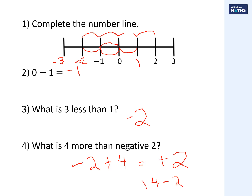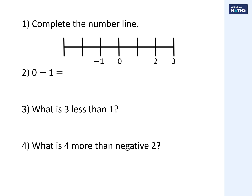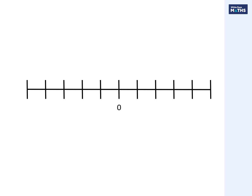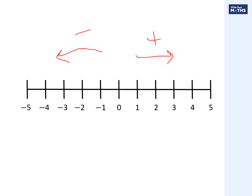That's the same as saying positive four subtract two, which is just two. Those are the White Rose Maths answers. Okay, let's move on to today's new learning. We have zero, one, two, three, four, five as counting numbers, and then minus one, minus two, minus three, minus four, minus five. The key takeaway is: if I'm subtracting, I go in this direction - to the left - and if I'm adding, I go to the right on my number line.